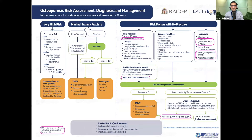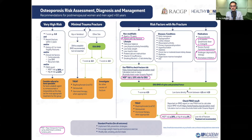The new 2024 guidelines are a one-page summary prepared for Australian GPs, designed similarly to other guidelines like the CKD guidelines. It is designed to empower GPs to act with confidence, following protocols step by step without worrying about missing something or doing something wrong. In this new version, age over 70 alone is no longer sufficient reason to order a bone density scan.